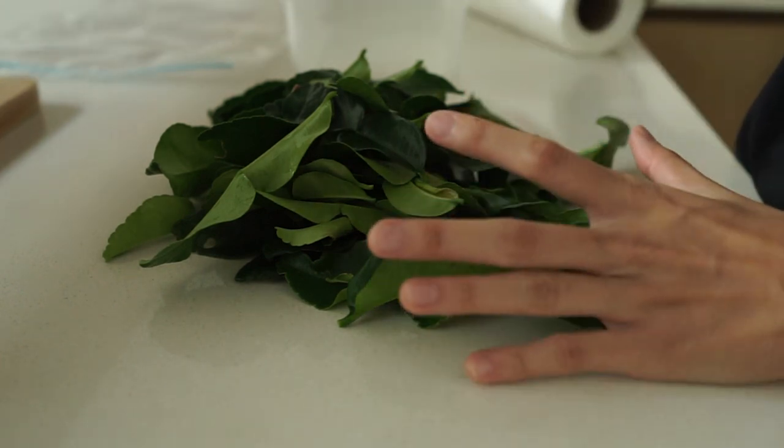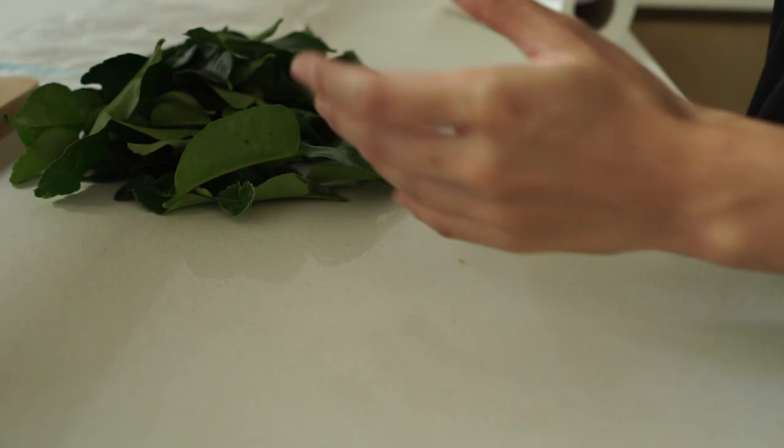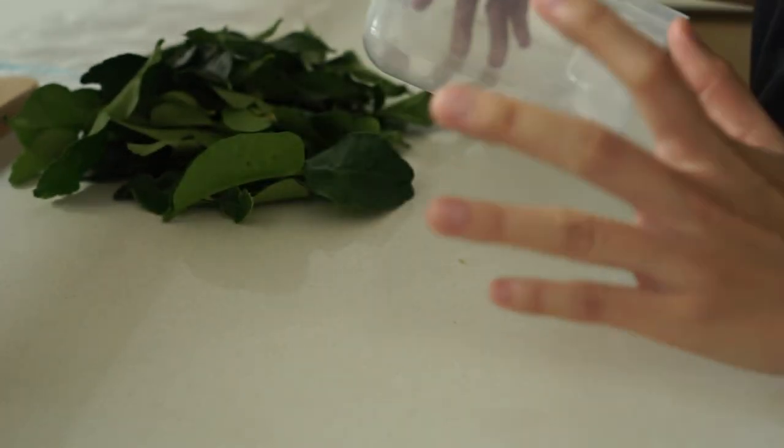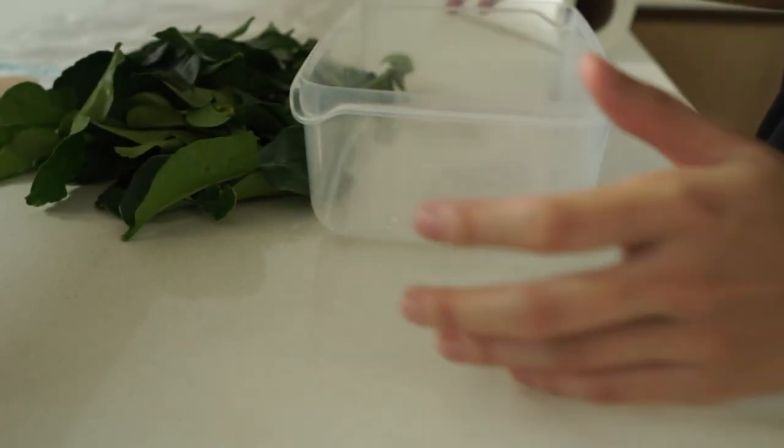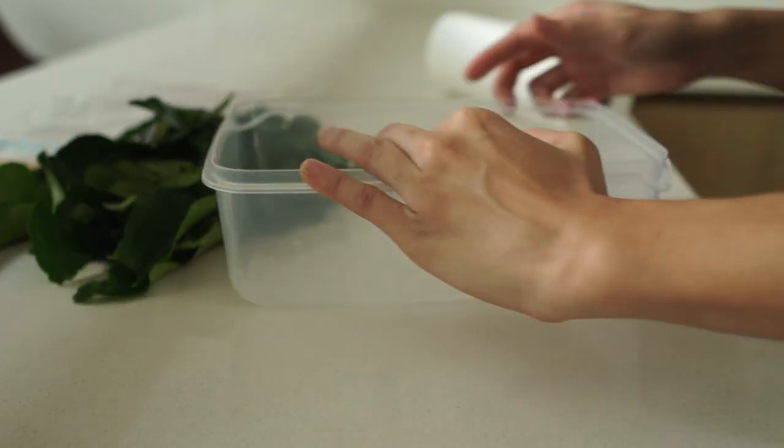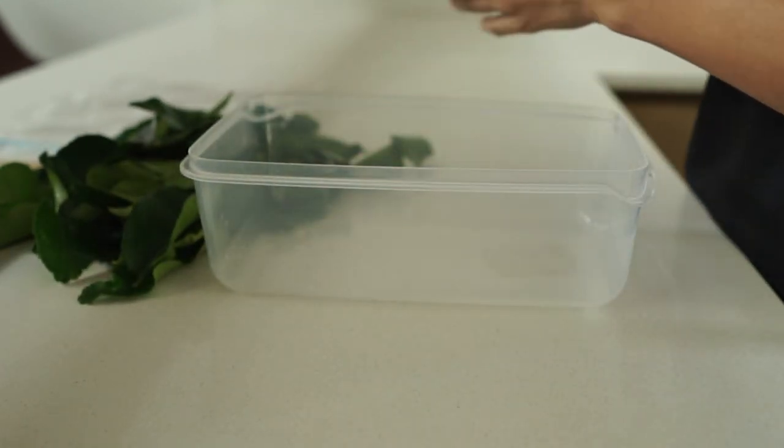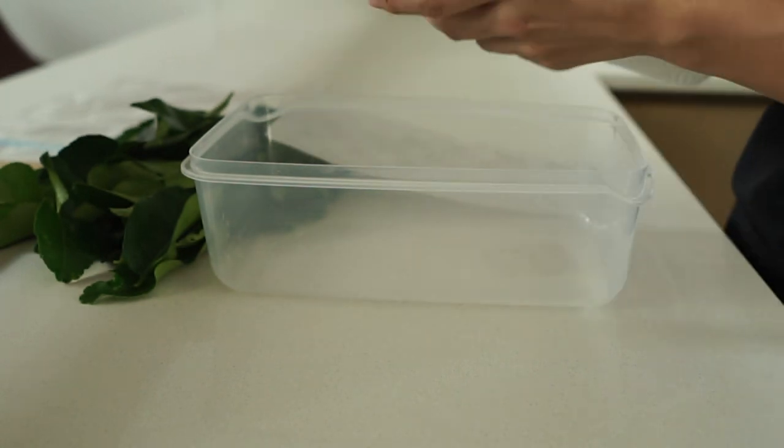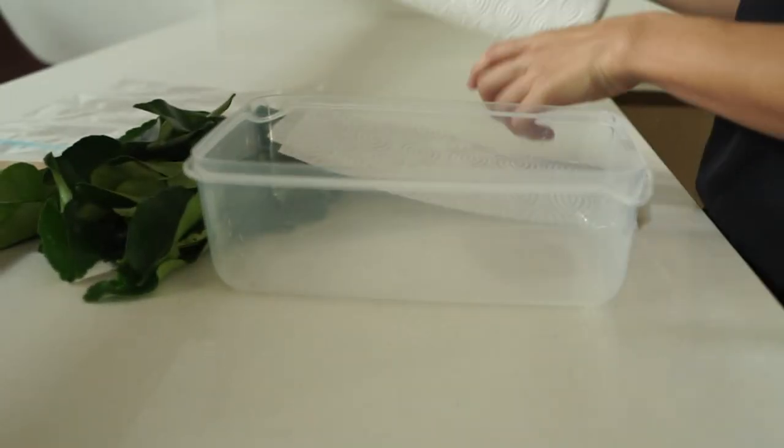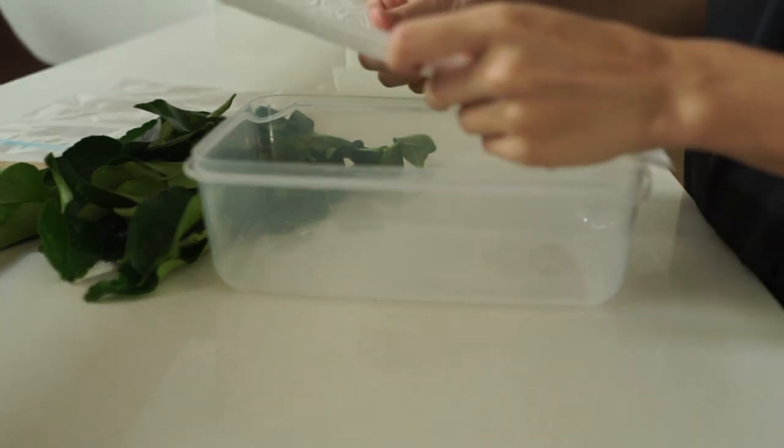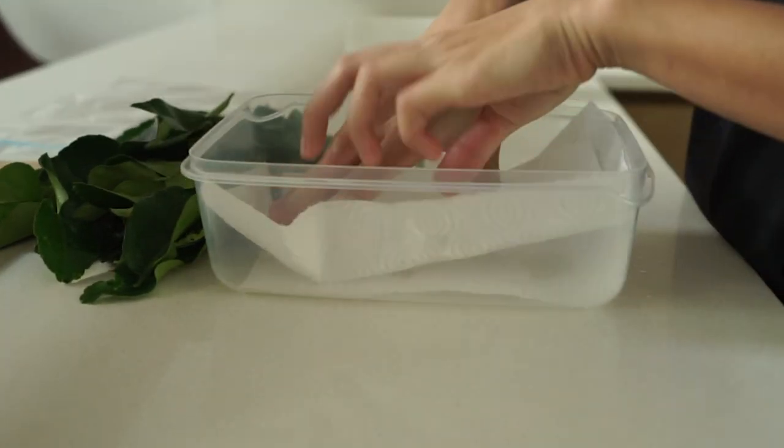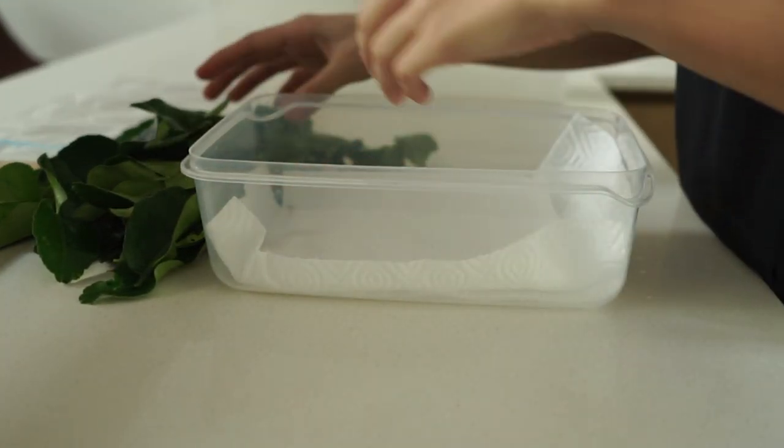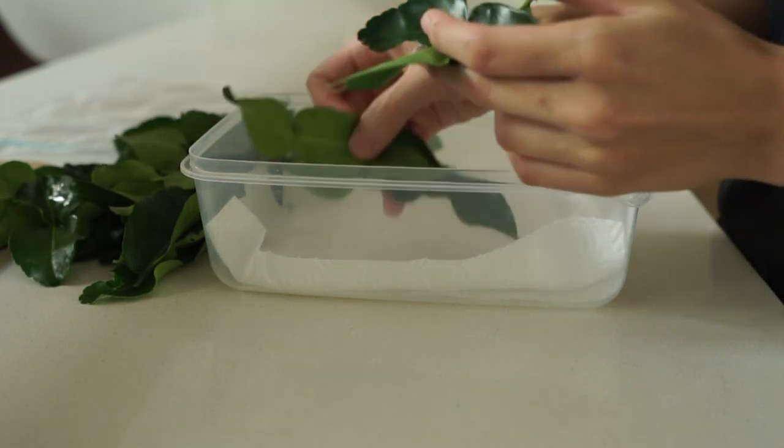To store them in the fridge, usually I like to use Tupperware but you can also use plastic bags if you like, and the method is very similar to storing other herbs. Basically you just need to lay paper towel at the bottom of the box and put kaffir lime leaves inside.